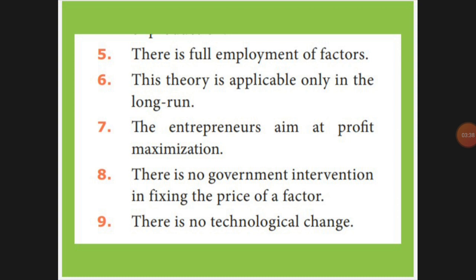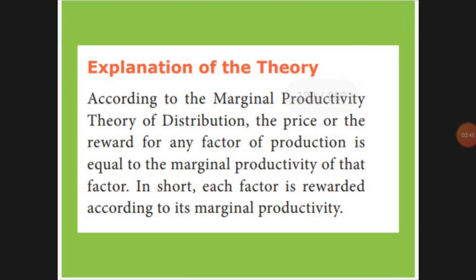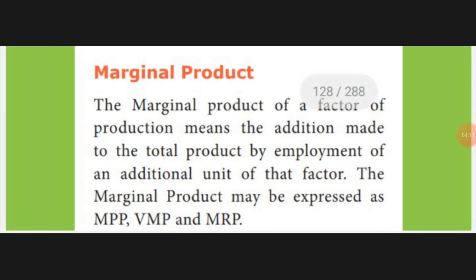Next, no technological change should occur — whatever technology they are using, they should not change it in between. According to the Marginal Productivity Theory of Distribution, the reward is distributed according to marginal productivity: if you are using more, your income is more; if you are using less, your income is less.